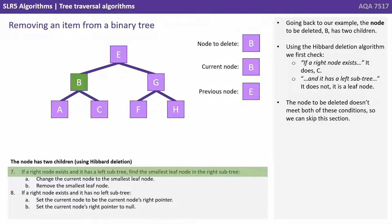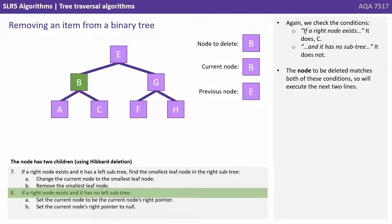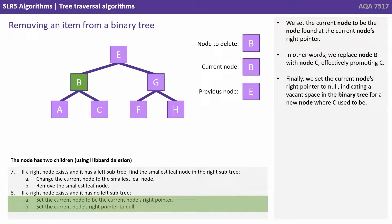Going back to our example, the node to be deleted B has two children. Using the Hibbard deletion algorithm, we first check if a right node exists — it does, C — and it has a left subtree. The node to be deleted doesn't meet both of these conditions, so we skip this section. We check the conditions again: if a right node exists (it does, C) and it has a subtree — it does not. The node to be deleted matches both of these conditions, so we execute the next two lines of code. We set the current node to be the node found at the current node's right pointer — in other words, we replace node B with node C, effectively promoting C. Finally, we set the current node's right pointer to null, indicating a vacant space in the binary tree where C used to be.